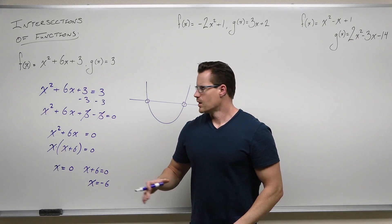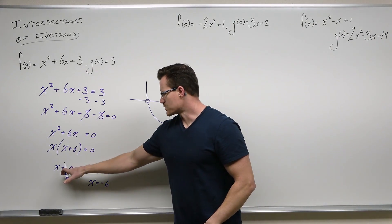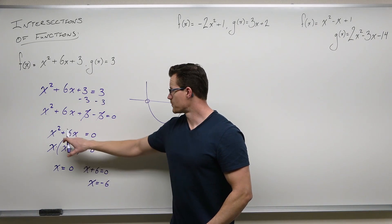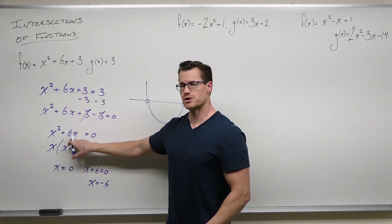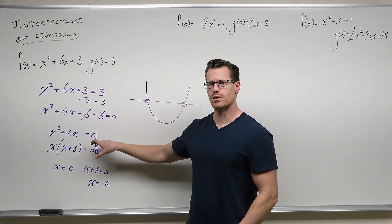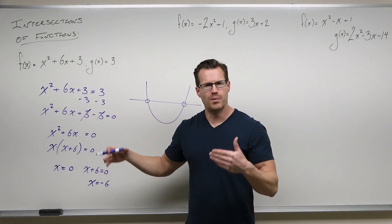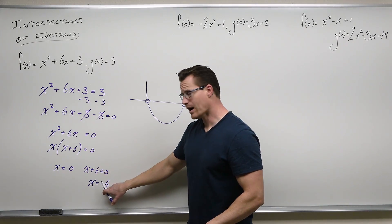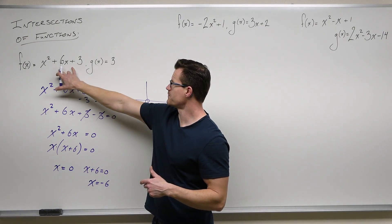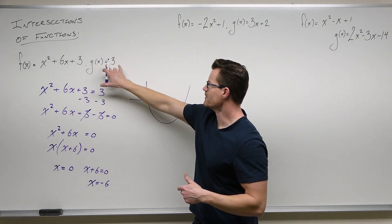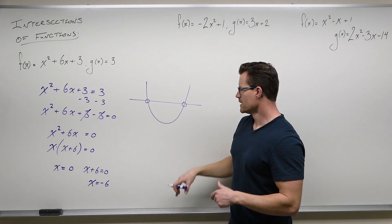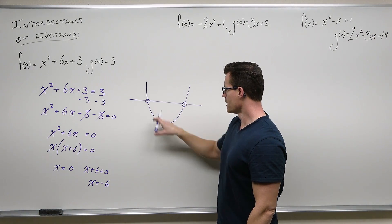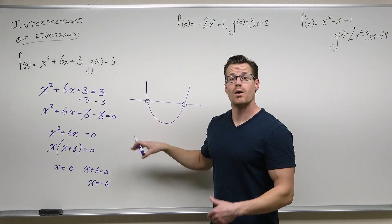Now, listen carefully. What this represents — these represent the x-intercepts for this function, because you set it equal to zero. But what it also represents is the x values where this function and this function intersect. So this will intersect at x equals zero and x equals negative six.